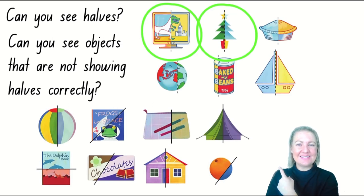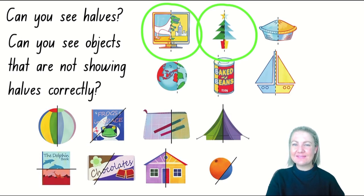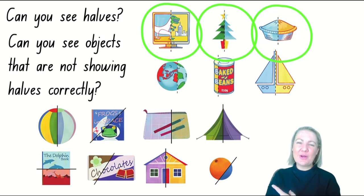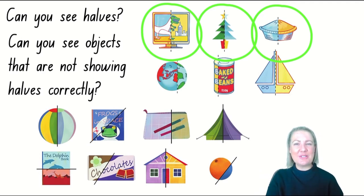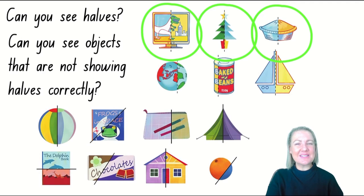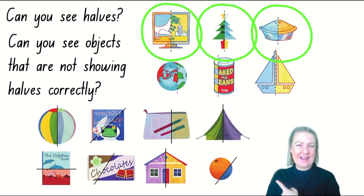There's a picture of a pie here. Does the line of separation show halves? Are both pieces the same? Is it equal? I think it is. Now, the world globe — it looks like Earth. Is the line of separation showing Earth split equally to show halves? It could be split down the middle or across the middle, as long as both sides are the same. I don't think so — both pieces do not look the same. There's one big piece and one teeny tiny piece. It's not a fair share, so I'm going to put a cross over this one.